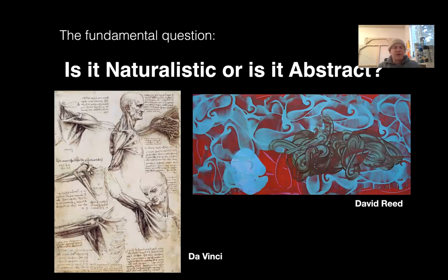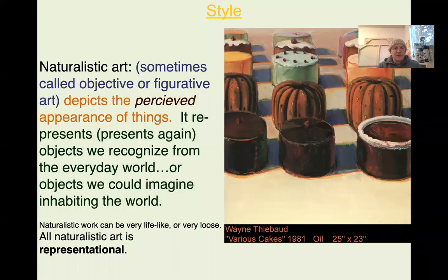The big question about style is: is it naturalistic or is it abstract? On the left we've got something really naturalistic; on the right, something really abstract. Those are the two broad categories. We'll start with naturalistic art — sometimes called objective or figurative art — which depicts the perceived appearance of things. It re-presents the objects we recognize from the everyday world, or objects we could imagine happening in the everyday world.